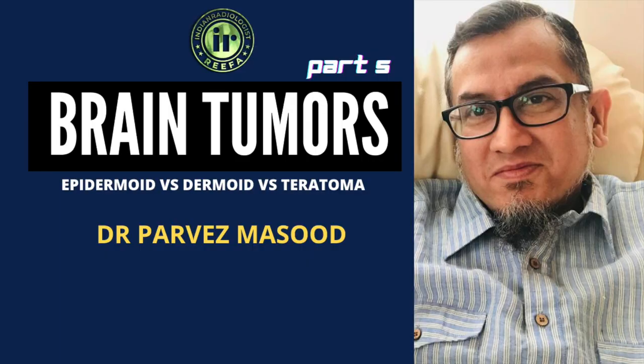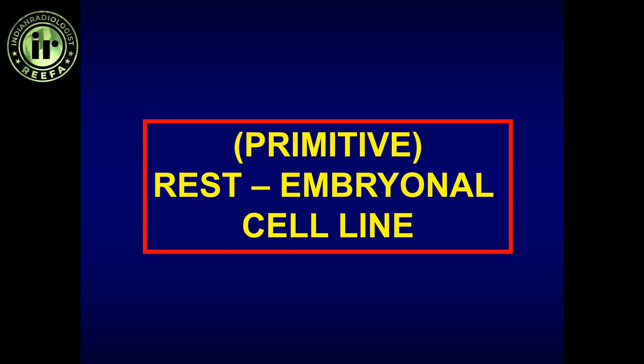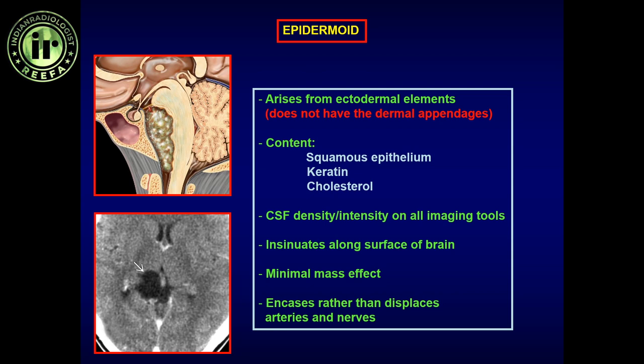Moving on to primitive rest cell kind of tumors — this entails conditions where mesenchymal, epidermal, and endodermal elements all contribute. Depending on which cell line contributes, you can classify into different entities: dermoid, teratoma, epidermoid, and so on.